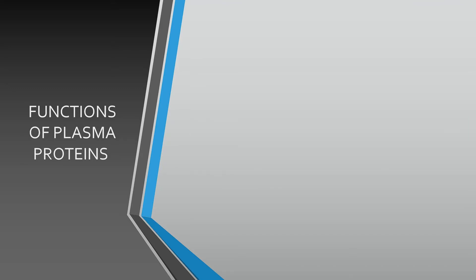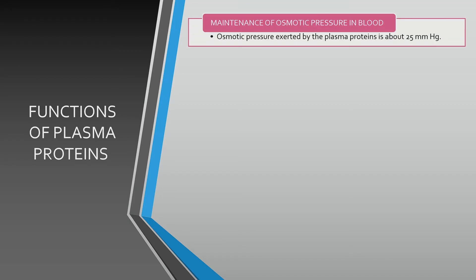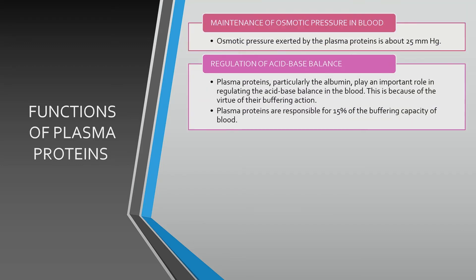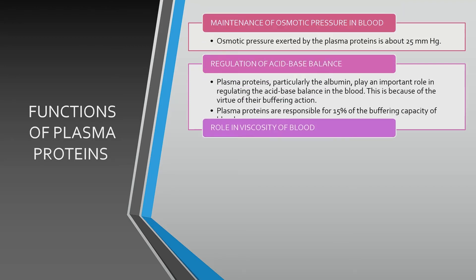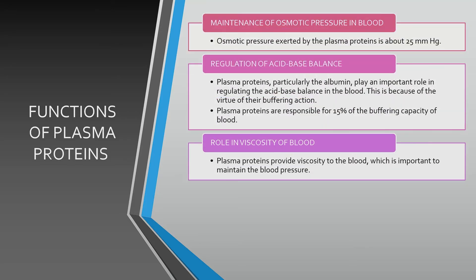Regarding maintenance of osmotic pressure in blood, the osmotic pressure exerted by the plasma proteins is about 25 mmHg. Plasma proteins, particularly albumin, play an important role in regulating the acid-base balance in the blood. Plasma proteins are responsible for 15% of the buffering capacity of the blood. Plasma proteins provide viscosity to the blood, which is important to maintain blood pressure.